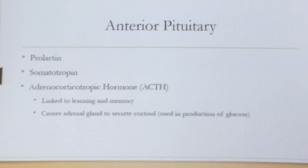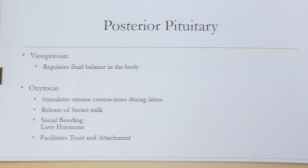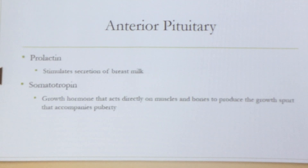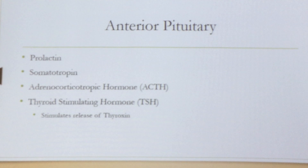Adrenocorticotrophic hormone, referred to as ACTH, is linked to learning and memory. It causes the adrenal gland to secrete cortisol, which is used in producing glucose. These are from the anterior pituitary — under the anterior pituitary category we have prolactin, somatotropin, adrenocorticotrophic hormone, and then what is called the thyroid stimulating hormone, or TSH.